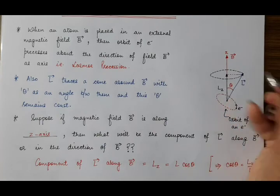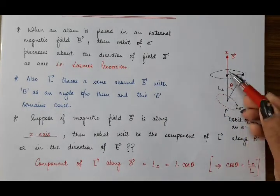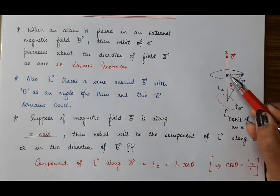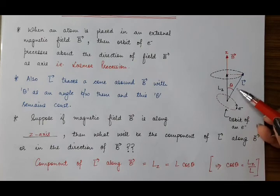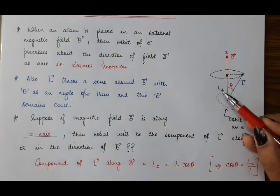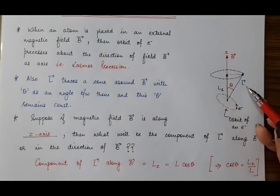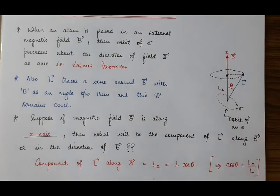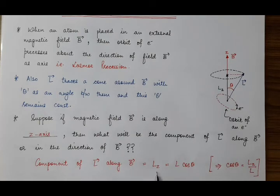Taking the right angle triangle formed by these vectors: LZ is the base, the perpendicular component is the other side, and L is the hypotenuse. We need to calculate LZ. So base upon hypotenuse gives LZ by L equals cos theta. Therefore, LZ equals L cos theta. This LZ is the component of the orbital angular momentum vector L vector in the direction of B vector. And if we need to calculate theta, then cos theta equals LZ by L.